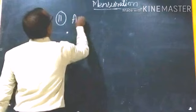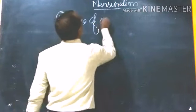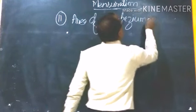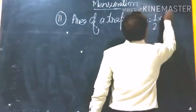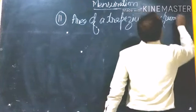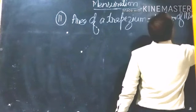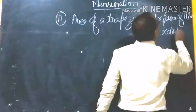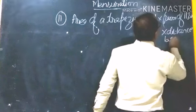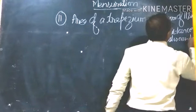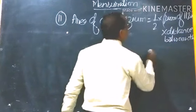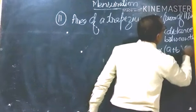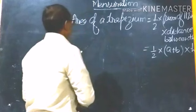Area of a trapezium is equal to ½ × (sum of the parallel sides) × (distance between them). That means the formula is ½ × (a + b) × h.